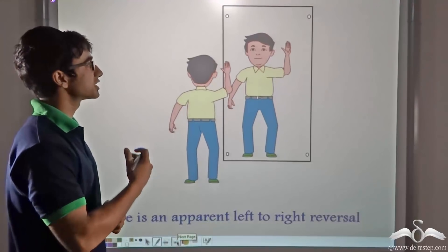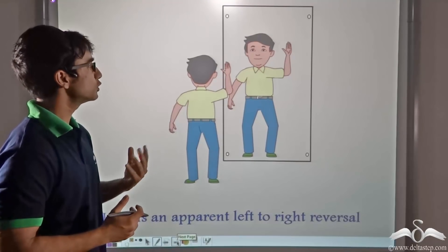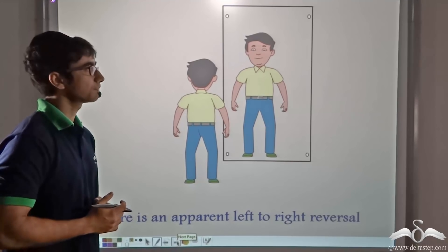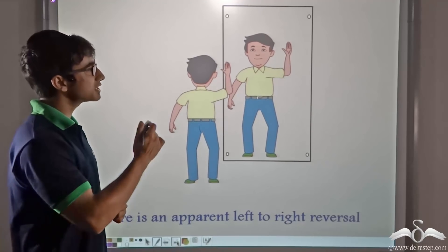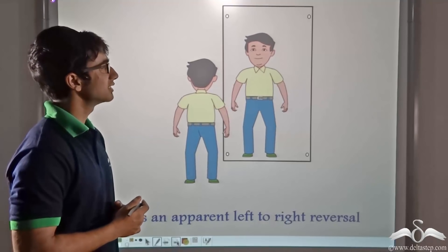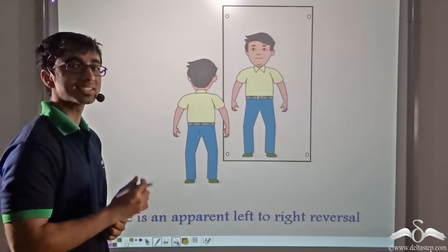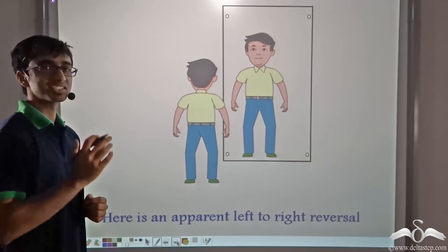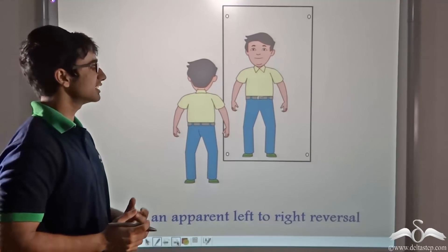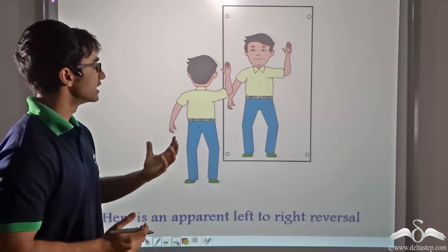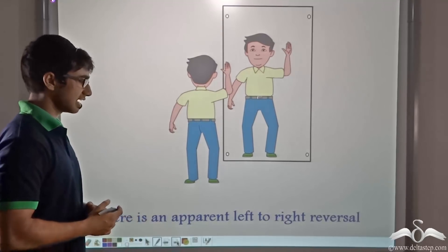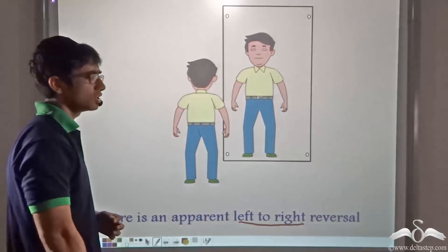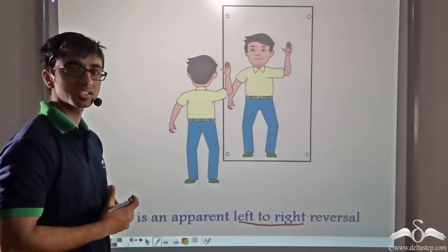Now notice this animation closely. Here you find that the boy is raising his right hand up. Now if you look at the image of the boy, you will notice that the image is raising up his left hand. So why do you think this is happening? The boy is raising his right hand and the image is raising his left hand. Here you notice that there is an apparent left-to-right reversal. So what is this left-right reversal called?